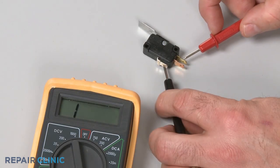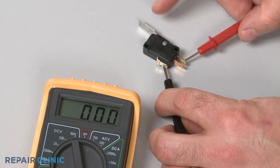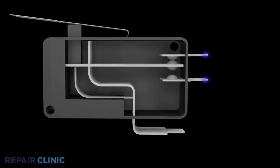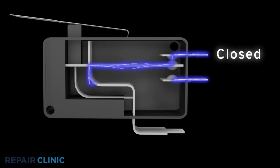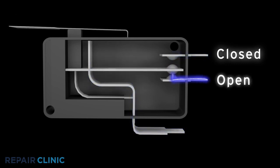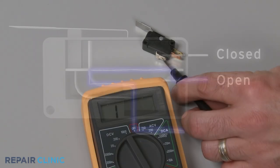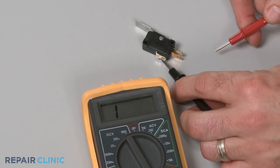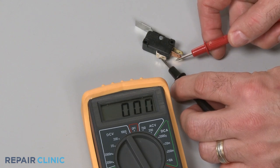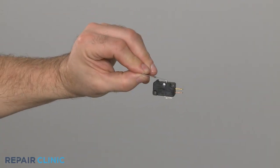Repeat the test for the normally closed terminal to determine if it has continuity. Keep in mind that the normally closed terminal should only provide continuity before the switch has been actuated. Likewise, the normally open terminal should only provide continuity after the switch has been actuated. If a terminal tests positive for continuity when it should not, it's likely that the switch has shorted closed and will need to be replaced.